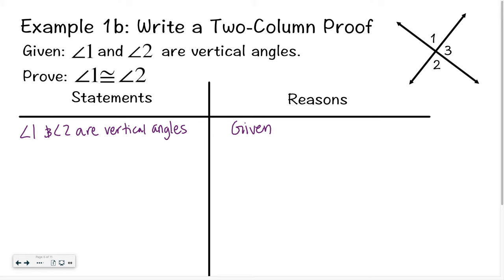Looking at the diagram, I can see that angle 1 and angle 3 form a linear pair and are supplementary, and angle 2 and angle 3 are also supplementary. Some of you are probably asking why don't I just say angle 1 and angle 2 are vertical angles, therefore they're congruent, because Theorem 1-1 tells us vertical angles are congruent. Well, that's not what we're trying to do here — we're trying to prove that theorem, so we can't use that theorem to prove itself.